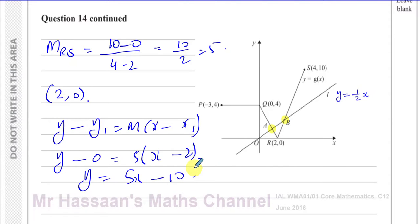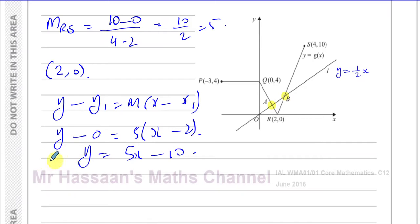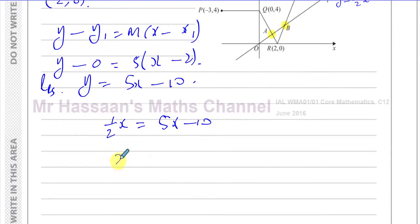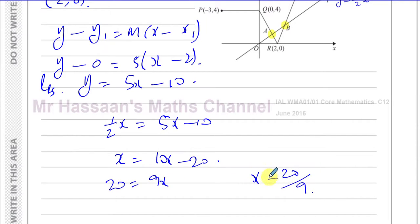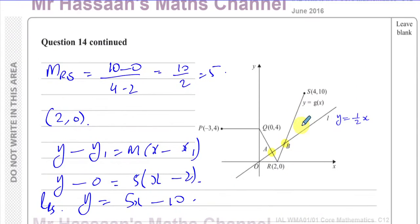To find point B, we set (1/2)x = 5x - 10. Multiplying through by 2: x = 10x - 20, so 20 = 9x, giving x = 20/9. That's the x-coordinate of point B. So we found both points A and B by finding the equations of the relevant line segments and solving simultaneously.